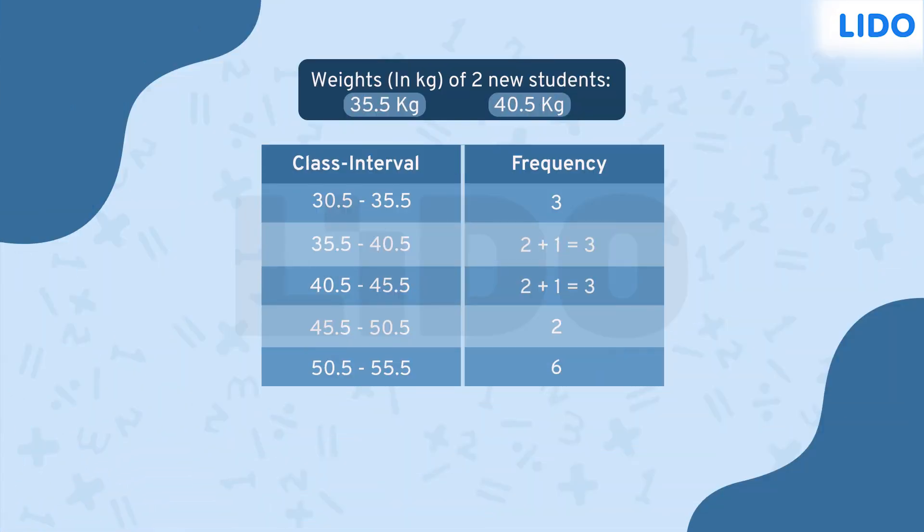Oh look, the table includes 35.5 and 40.5 as well in the intervals. Now we can include the weights of Sonia and Rahul.